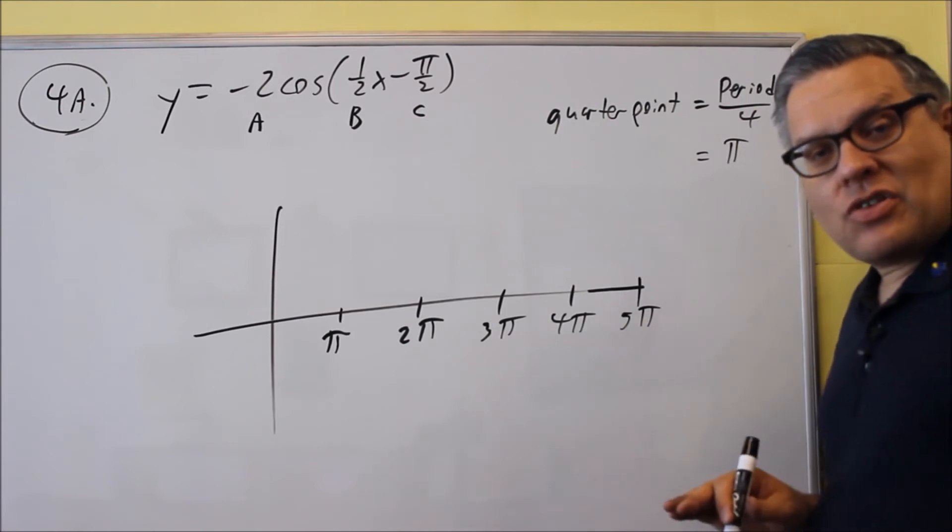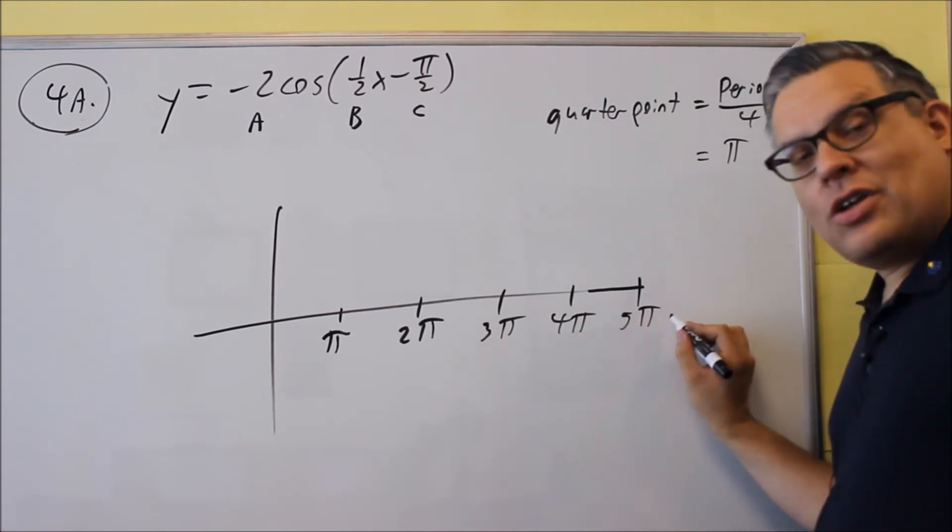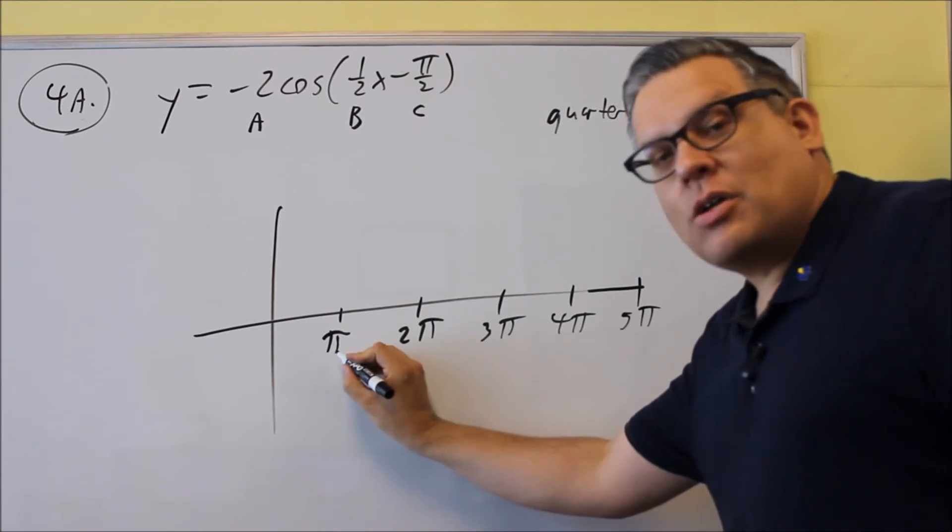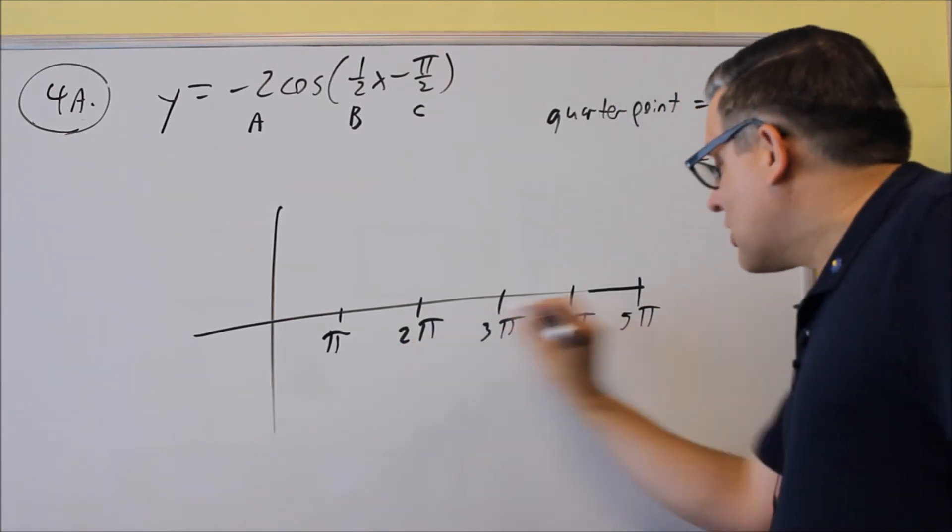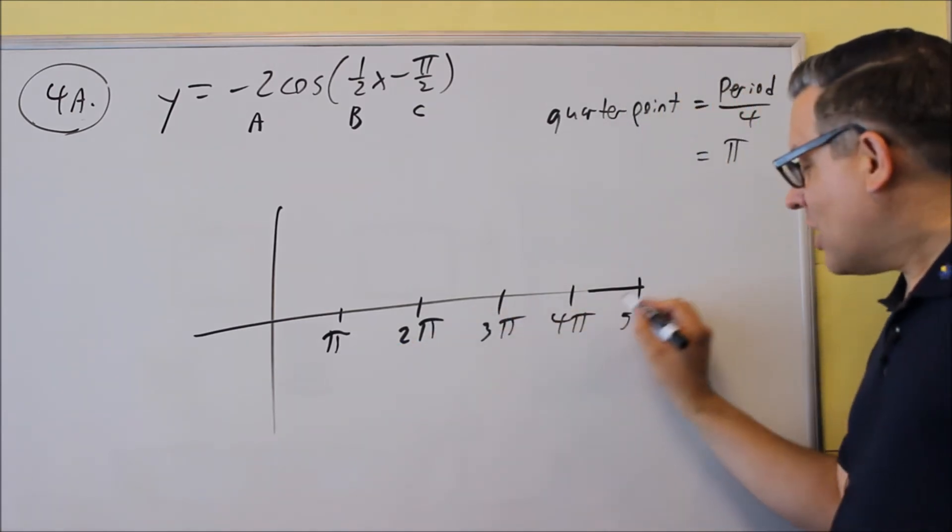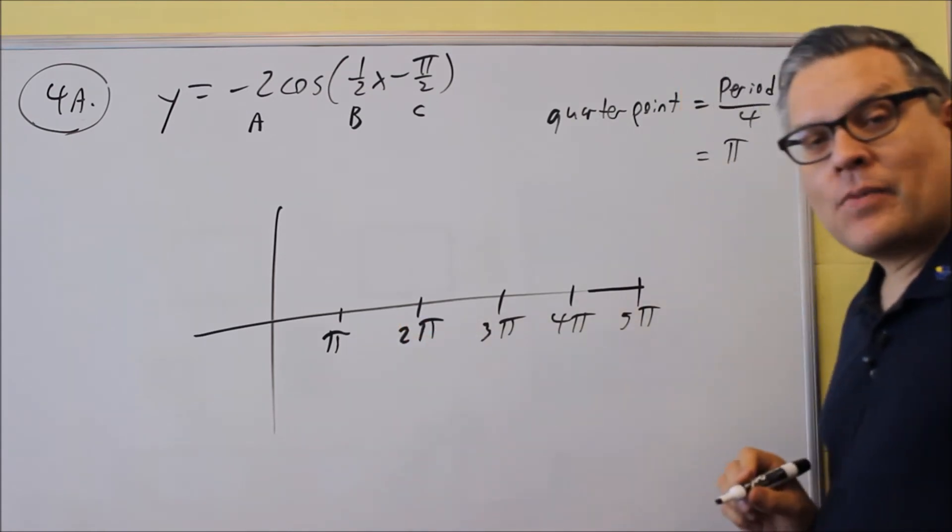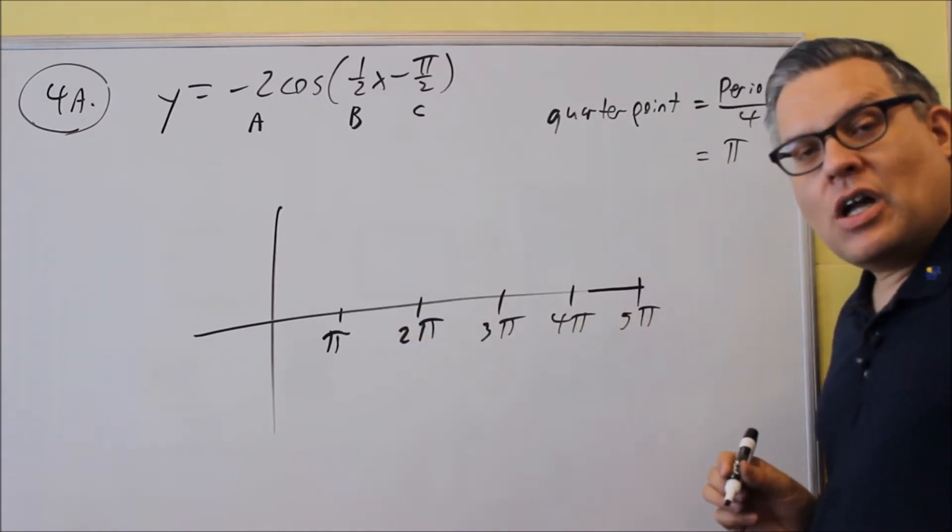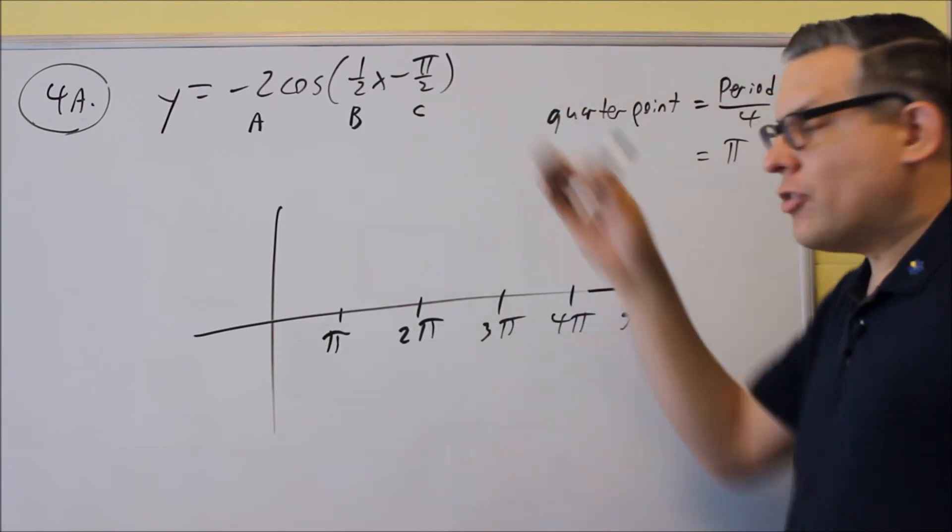Okay, now one thing you can check to see if you did this correct is if you take the ending point here and subtract the beginning one you have, the distance of that should be your period. So if I take 5π minus π, I get 4π, and that makes sense. That's going to be what my original period was for this problem.